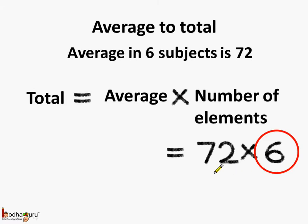So 6 is the number of elements and if we multiply it by the average we get the total which equals 432. So the boy got a total of 432 marks in 6 subjects.